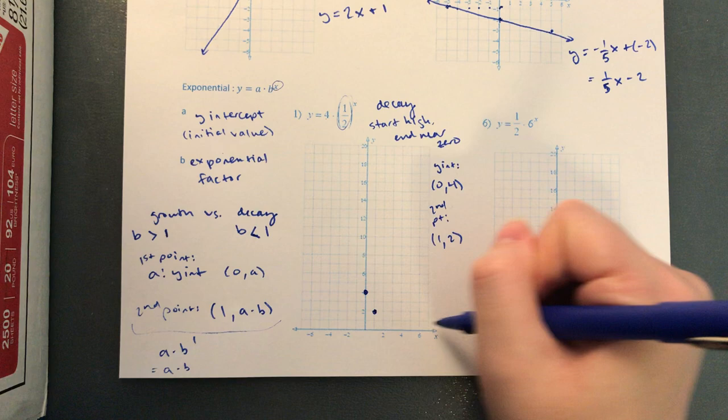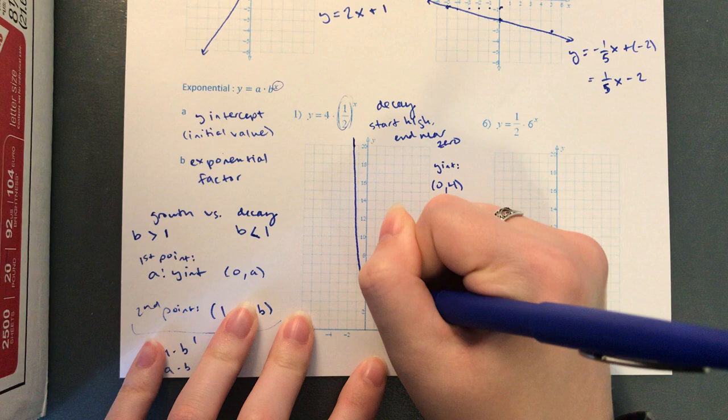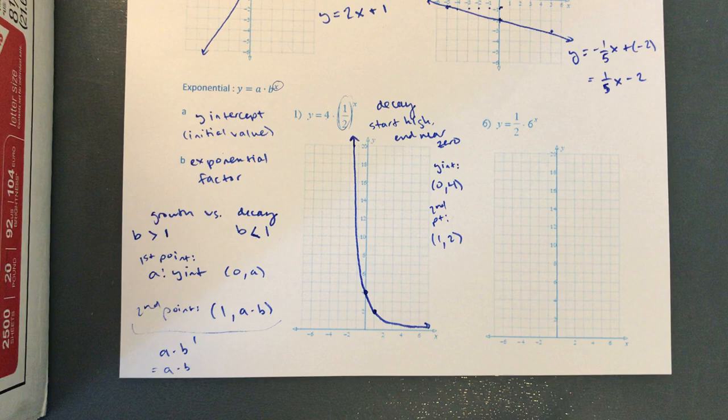There are our two dots. Remember, an exponential graph looks like a curve. We start really steep, and as time goes on we get really close to zero really quickly. It'll look something like that.